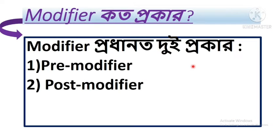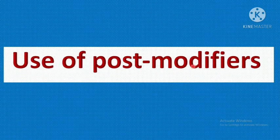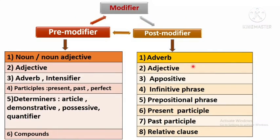How many types of modifier are there? Modifier is of two types: pre-modifier and post-modifier. What is a post-modifier? A modifier that sits after a noun, noun phrase, or clause and provides additional information about that noun is called a post-modifier.